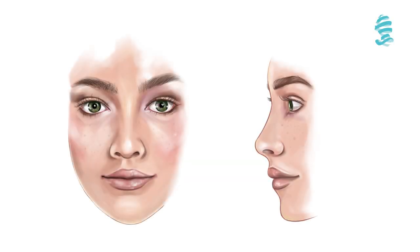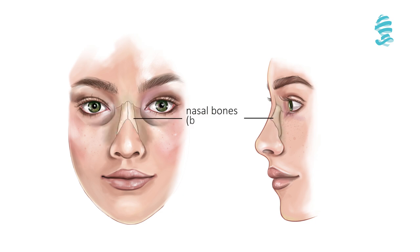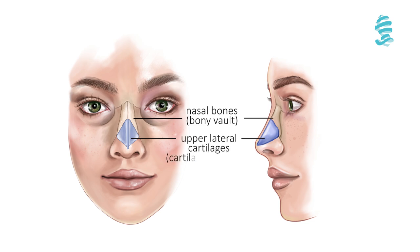When we look at the anatomy of the nose, the upper third is made up of the nasal bones and is called the bony vault. The middle third is the cartilaginous vault and is composed of upper lateral cartilages.